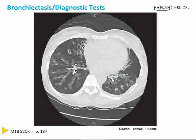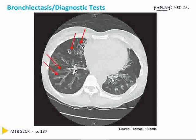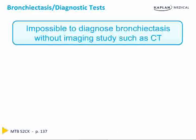On your screen now is an example of a high-res chest CT showing bronchiectasis. As you can see, the large airways are extremely dilated and are indeed larger in diameter than their corresponding bronchial arteries. Remember, bronchiectasis is not a diagnosis that can be made without imaging — you must have supporting imaging, usually a chest CT, in order to diagnose bronchiectasis.